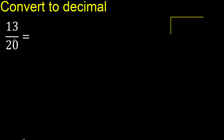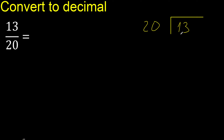13 divided by 20. 13 is less, therefore complete — always complete with 0. Here: 0 point.